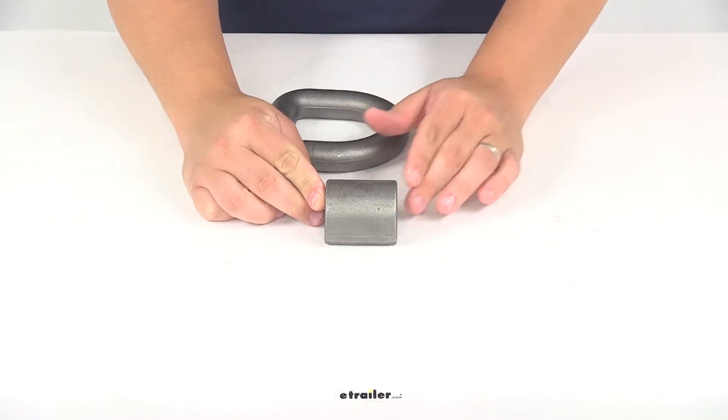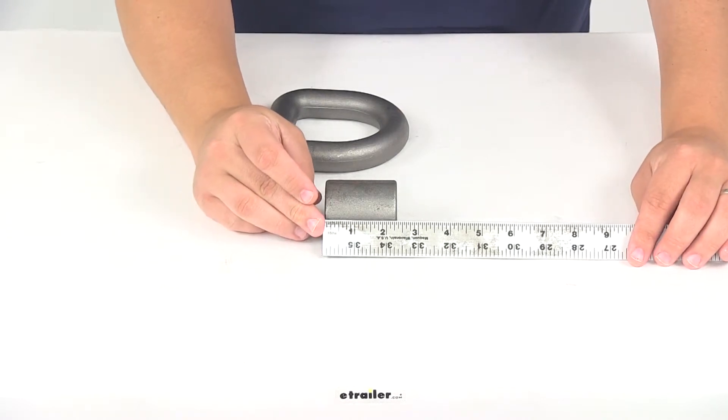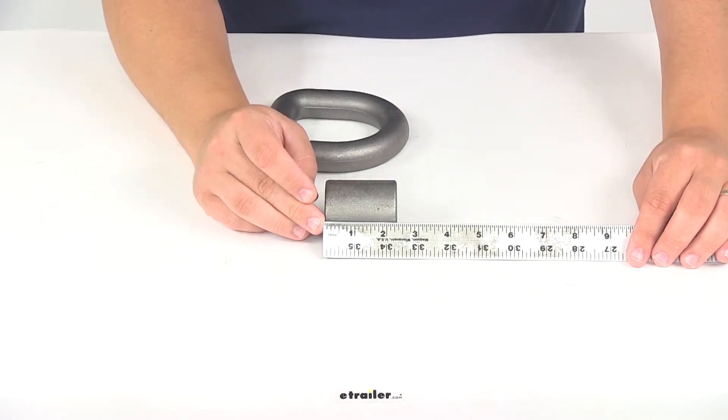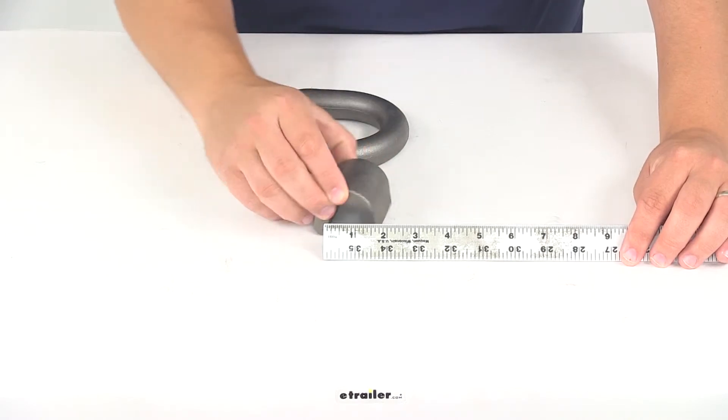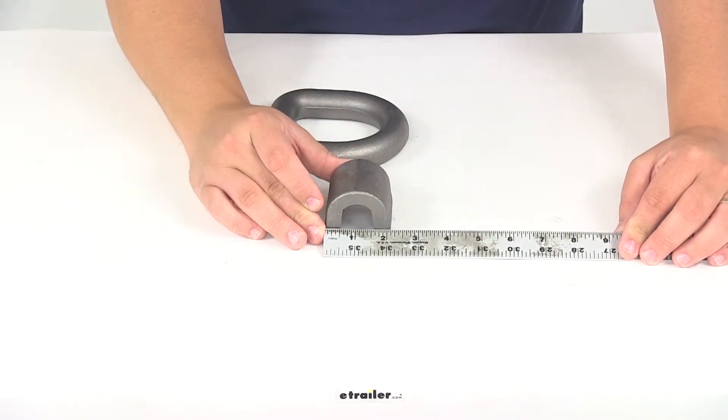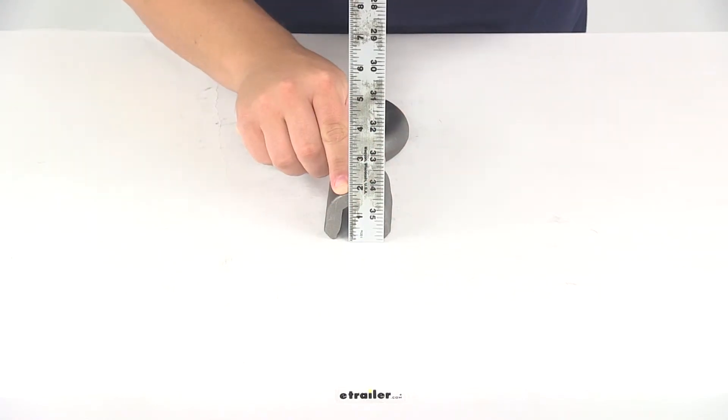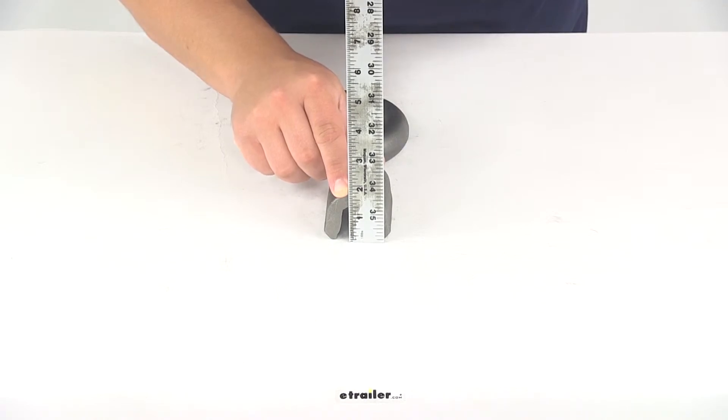For the bracket dimensions, measuring this direction outer edge to outer edge, it measures about two and one-eighth of an inch. This direction outer edge to outer edge is about two and one-eighth of an inch. And measuring from the bottom to the top, that measures about one and three-quarters of an inch.